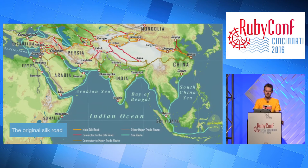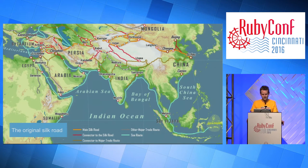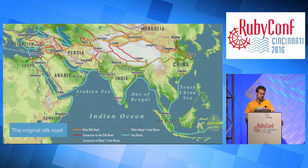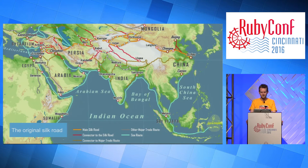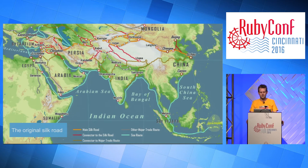We didn't really start to see screen printing spread outside of China until the 17th or 18th century, when it traveled through the real Silk Road — which was a real road — the trade route from China to the rest of the world at the time. Silk and screen printing were tied together, hence the phrase 'silk screen printing.' Silk was required because it was a very strong material — you couldn't really do screen printing using cotton for the screen. So we start to see it spread into the west around that time.